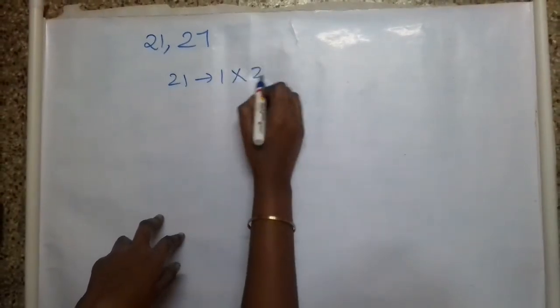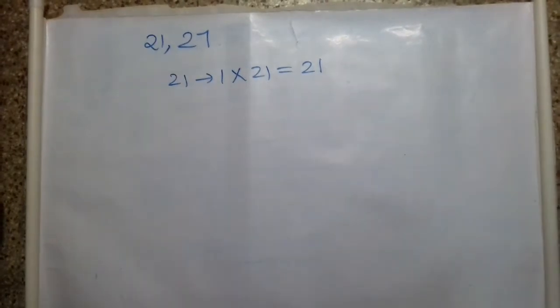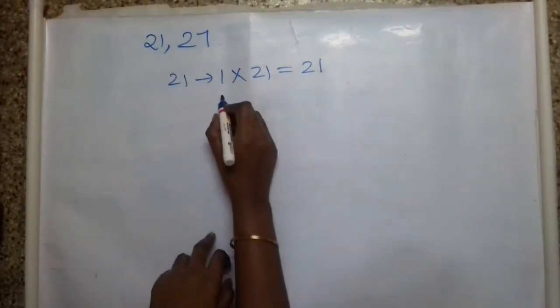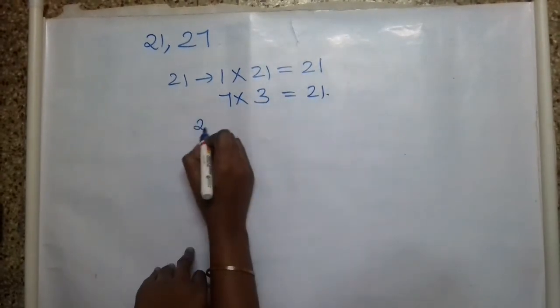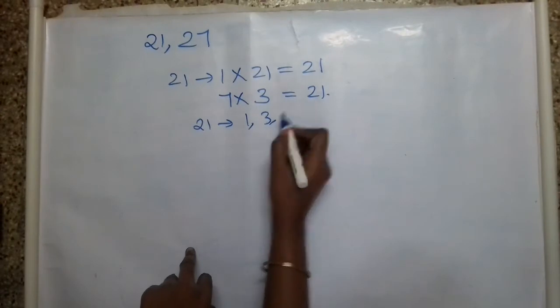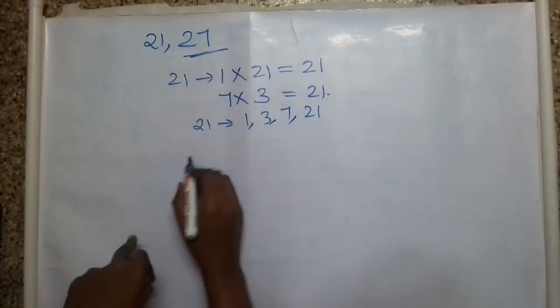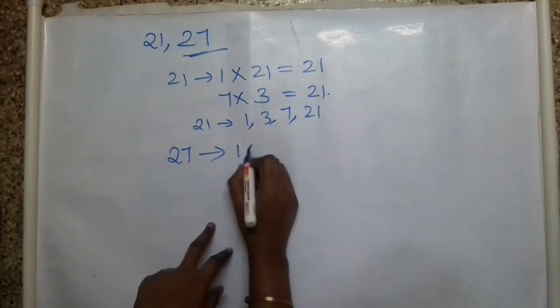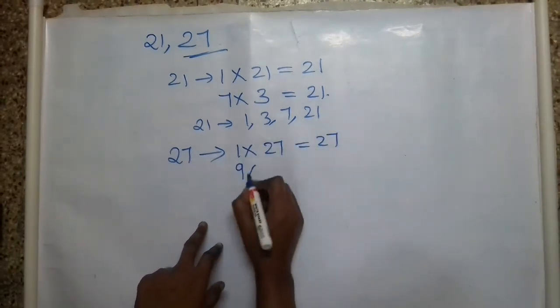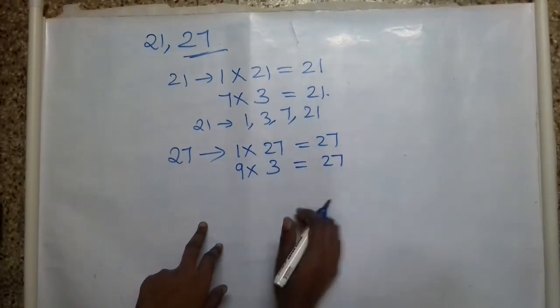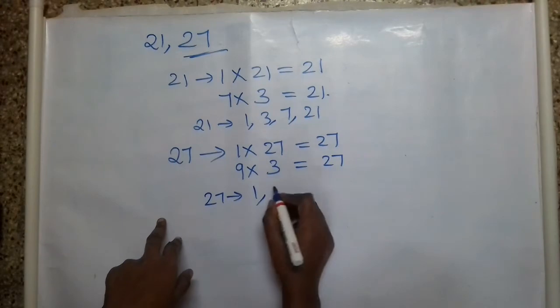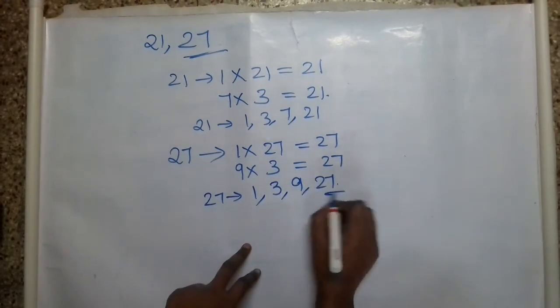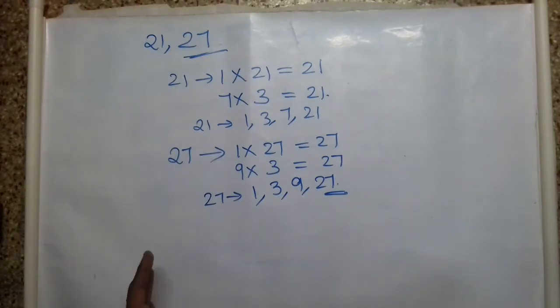Now let's look at one more example to understand the difference. The next example is 21 and 27 — let's check if this is a co-prime number. For 21: 1 into 21 is 21, and 3 into 7 is also 21. So the factors of 21 are 1, 3, 7, 21. For 27: 1 into 27 is 27, and 9 into 3 is 27. So the factors of 27 are 1, 3, 9, 27. Now find out the common factors.